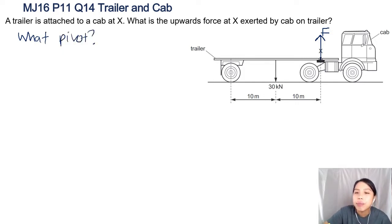Let's see. If we choose our pivot at X, then we can't find X because if all the forces at the pivot doesn't affect the torque. So I'm going to choose the pivot at the butt of this trailer. I'll say this is my pivot.